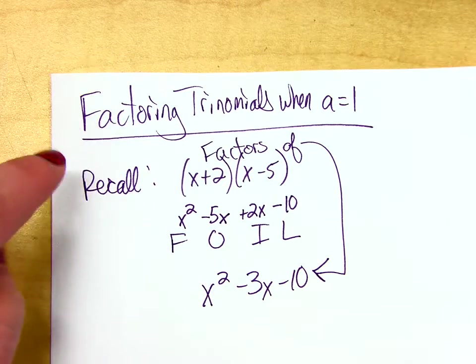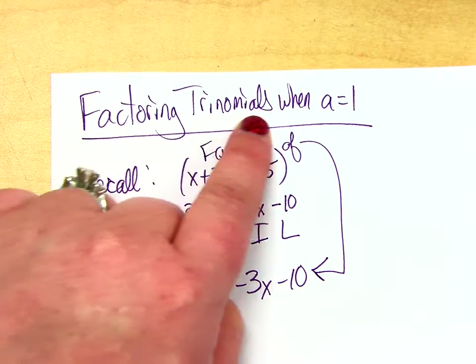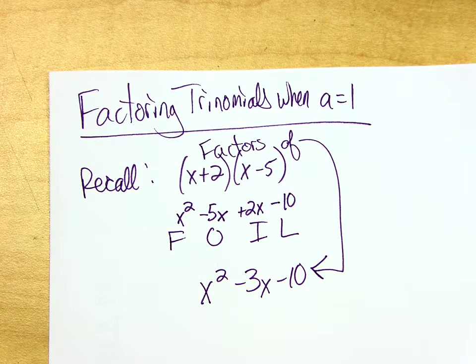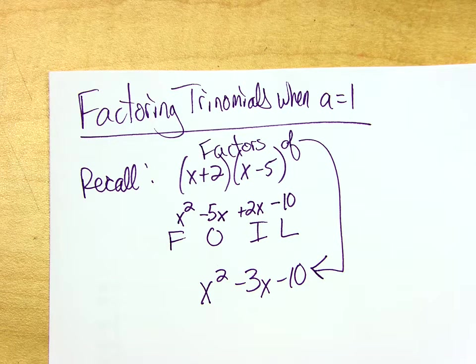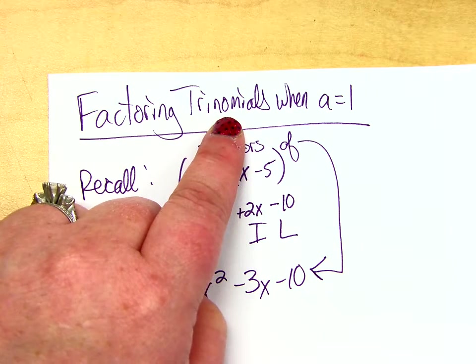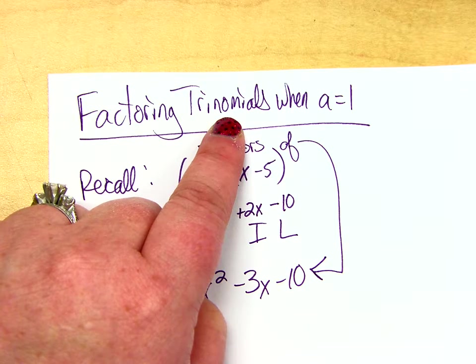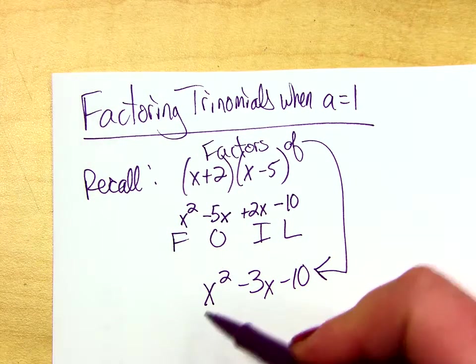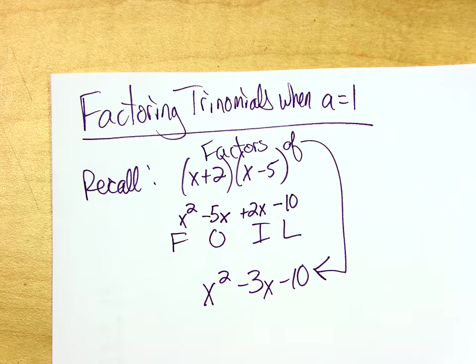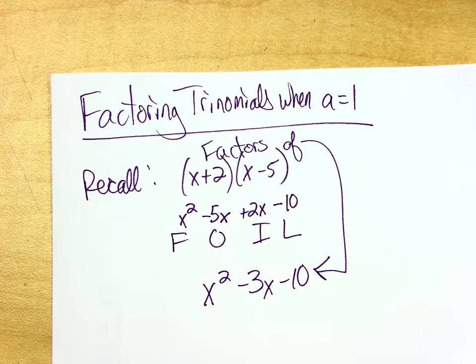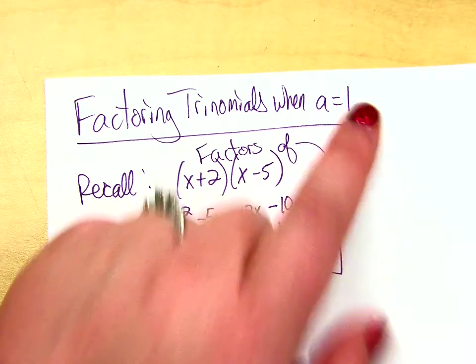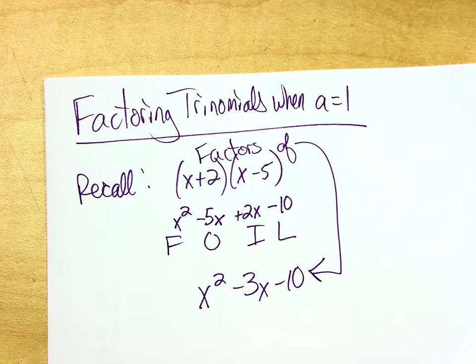So I told you I would go over factoring trinomials when A equals 1. Factoring, so that's just splitting it up into the two numbers so that when I multiply it back together, I get back to the original. Trinomials. You know that word already. What's a trinomial? It's just a three-term polynomial. And then what's this business when A equals 1? Well, let me explain.